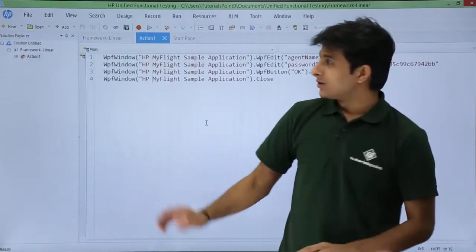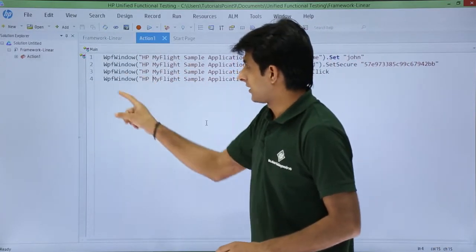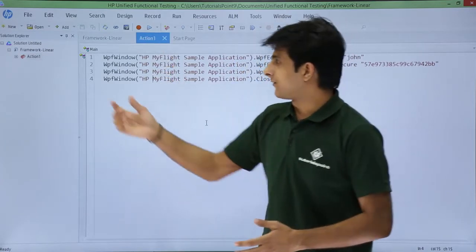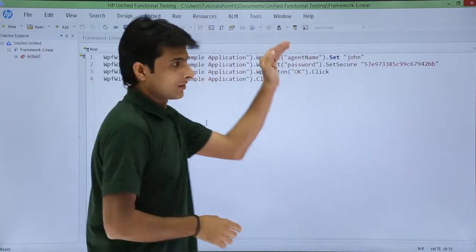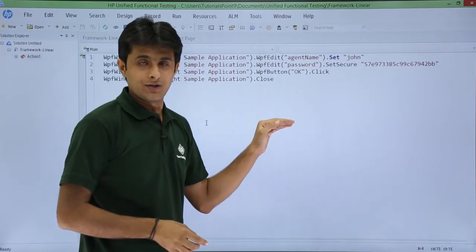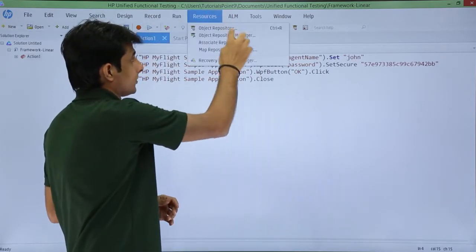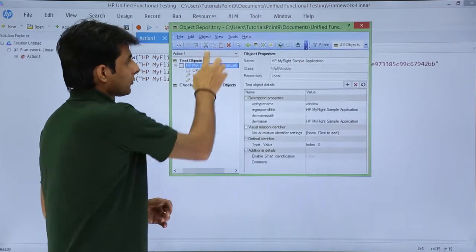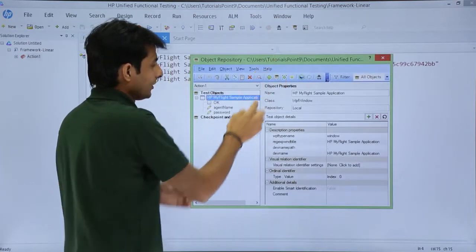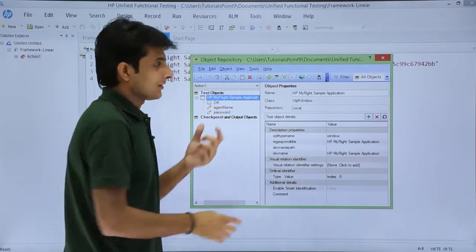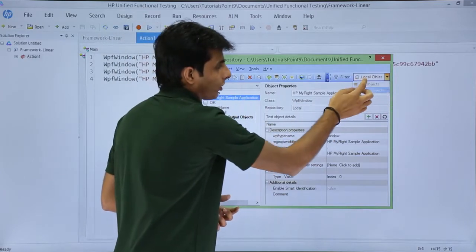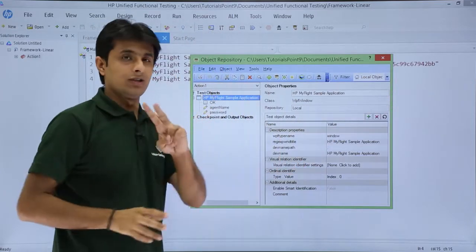This is the framework. If you see, these are the scripts you have recorded here, that is the framework linear. I have the scripts in the form of dot MTS extension and I have the object repository. If I go to resources, object repository, I have these local objects. I only need these two things.